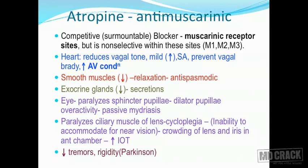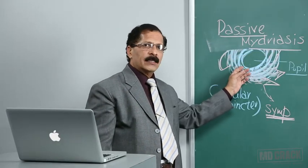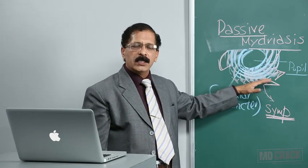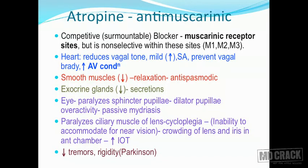The second intrinsic muscle of the eye is the ciliary muscle of the lens, which also has a muscarinic site. Atropine blocks the ciliary muscle, leading to cycloplegia — paralysis of the ciliary muscle of the lens — causing inability to accommodate for near vision. Because the sphincter pupilli is paralyzed, the lens falls forward and crowds the anterior chamber, leading to increased intraocular pressure. So atropine produces three ocular effects: passive mydriasis, cycloplegia, and increased intraocular pressure.